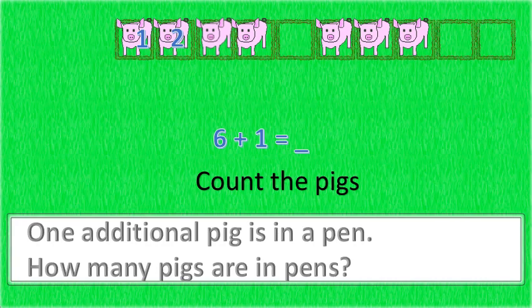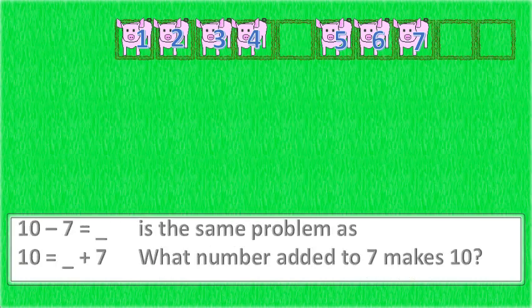1, 2, 3, 4, 5, 6, 7. 6 plus 1 equals 7. 10 minus 7 is the same problem as what number added to 7 makes 10, or 10 equals an unknown plus 7.